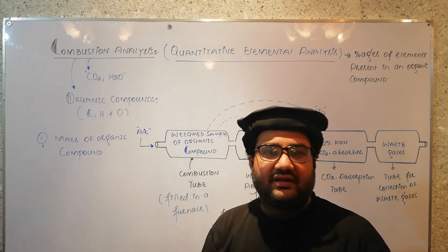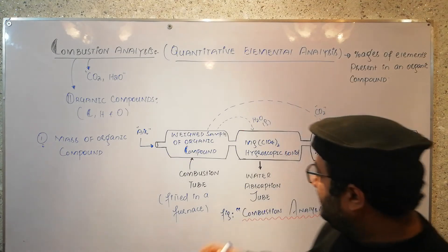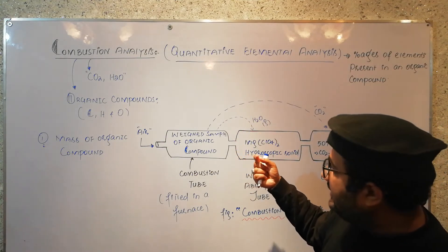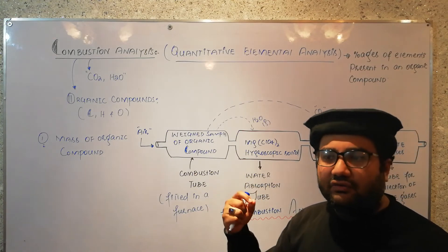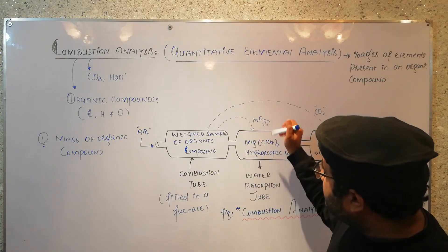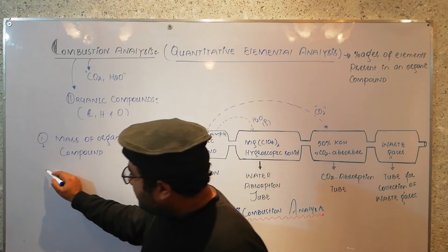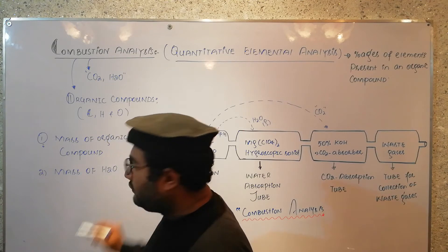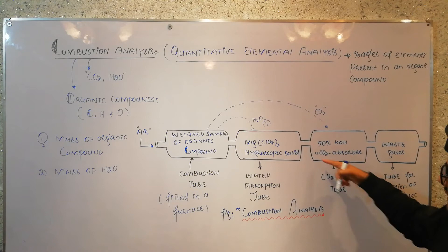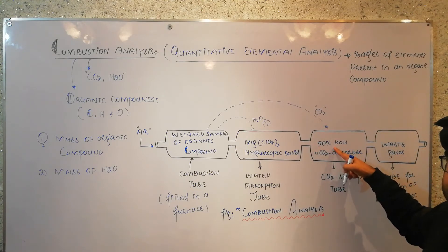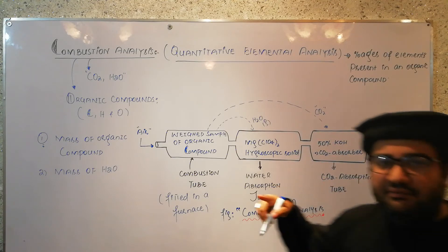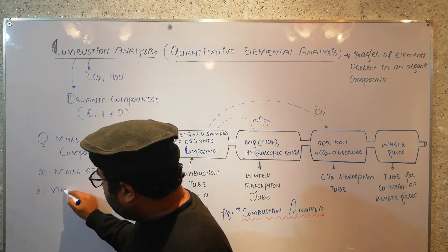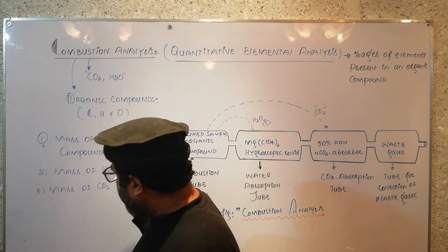Now the difference in weight before combustion and after combustion gives us the mass of each product. Suppose before combustion the tube with magnesium perchlorate weighed 5 grams, and after combustion it weighed 6 grams — that 1 gram is the mass of H2O. Similarly, the CO2 absorption tube is also weighed again: the weight after combustion minus the weight before combustion gives you the mass of carbon dioxide.